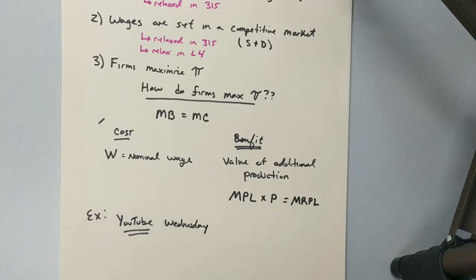The cost was the nominal wage, which we're going to represent as a capital W. The benefit is the value of the additional production. Now we've previously defined the marginal product of labor, that MPL is how many additional goods or services or production is going to be made by this worker. And we want to get the value of that to get it into monetary terms.